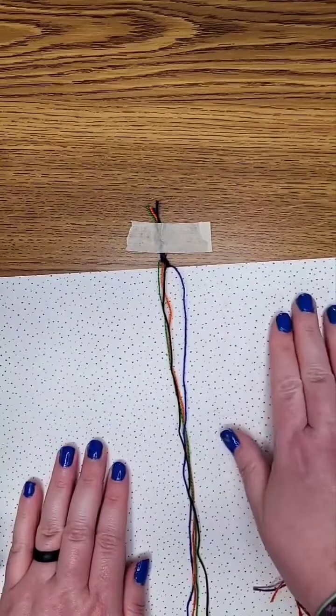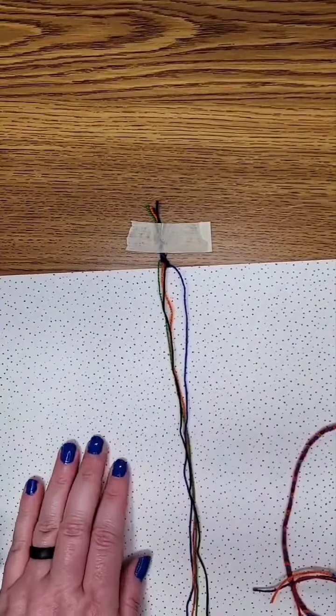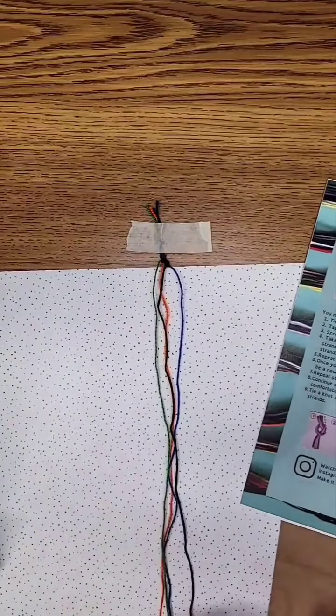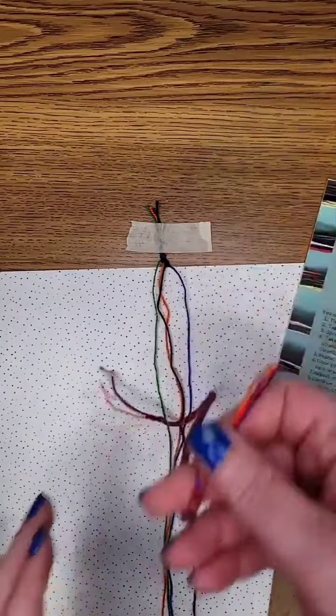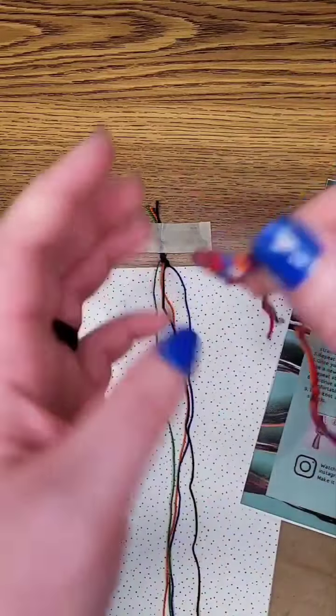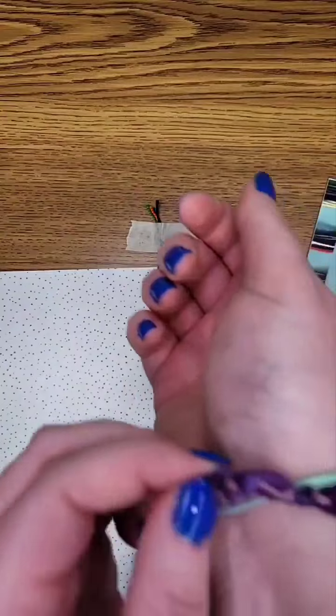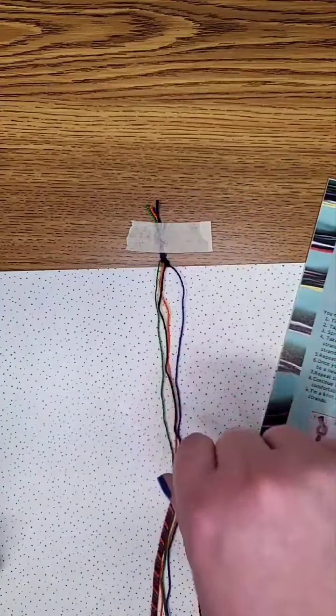So forward moves from left to right. Backward moves from right to left. And you keep making that until it's a comfortable length to fit around your wrist. Then you tie the end. And then you tie it around your wrist and cut off the excess.